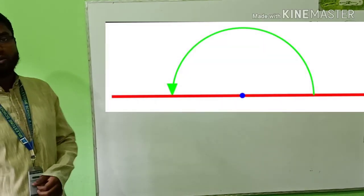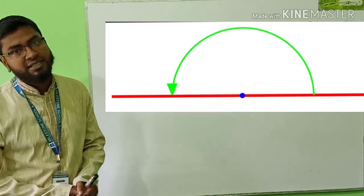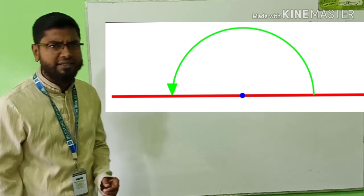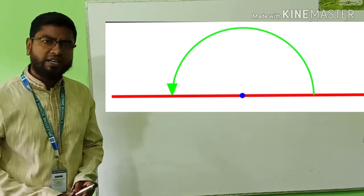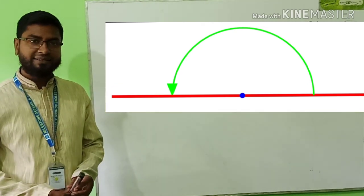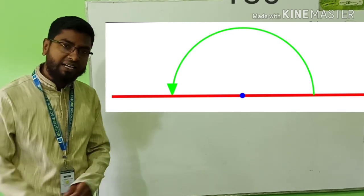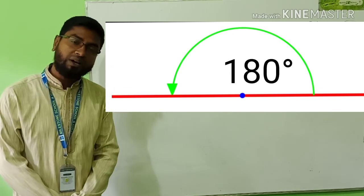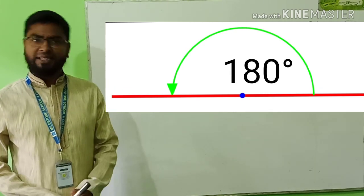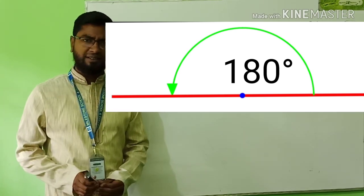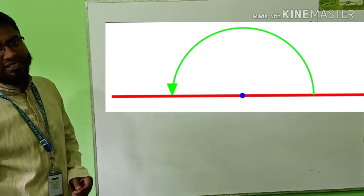See this. What type of angle is this? Yes, you are right. It is a straight angle because it measures exactly 180 degrees. Thank you. You are brilliant — you can give the correct answer.